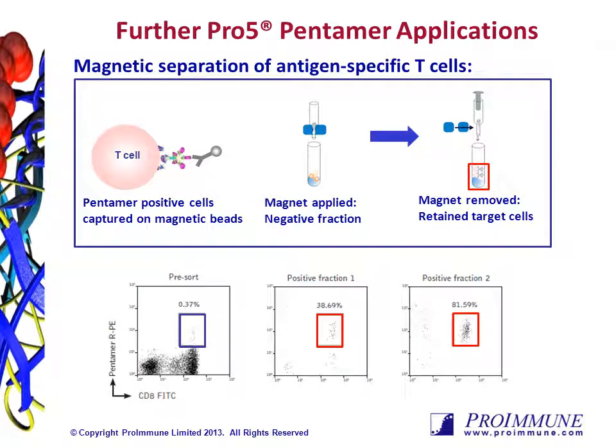In addition to simply staining and enumerating specific T cell populations, pentamers can be used to enrich or remove specific T cells. Magnetic beads with anti-RPE antibody can be used to capture T cells with particular specificities determined by the pentamer specificity. This allows separation of the negative and positive fraction of cells, and removal of the magnet allows the retained target cells to be released. The flow plots show how the proportion of pentamer positive cells is greatly enhanced using this method.